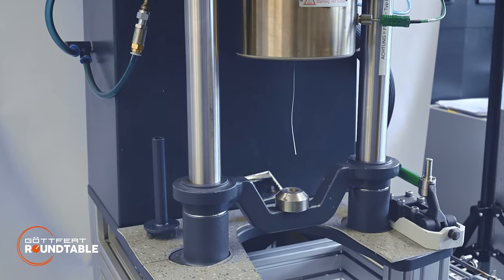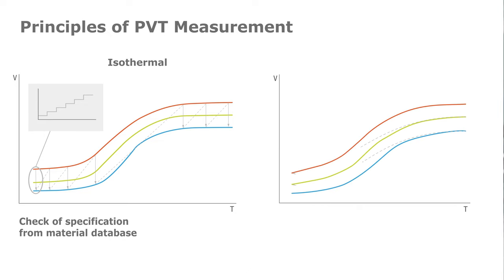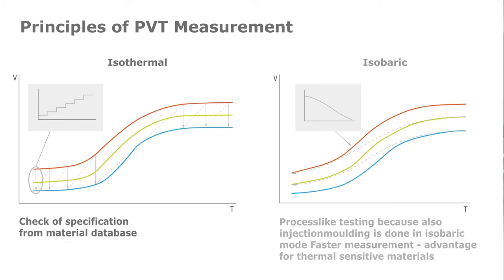On the other side, we have the isobaric measurement, which is the most process-like measurement. Here we have a set constant pressure; the sample is cooled down from high temperature to a low temperature at a constant cooling rate. Then consequently, different pressures are set and different isobars are measured.